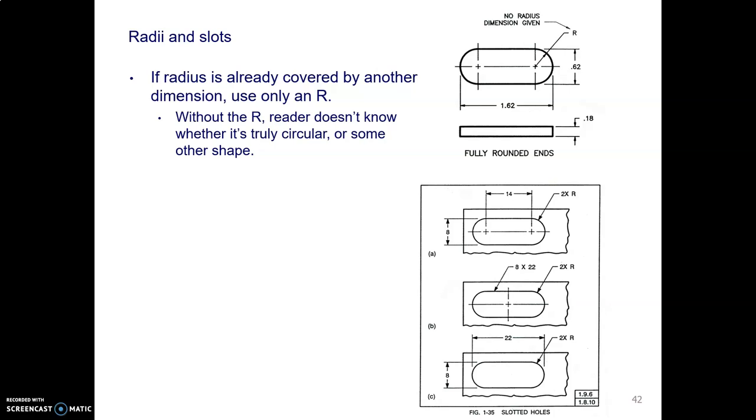Then with radii and slots, we have to watch out for duplicate dimensions here. If we have a slot with a radius on the end, if you dimension the thickness of the slot, then for the radius you just say R. You need the R to tell them what shape it is, but if you gave them the size of the radius, that would be a duplicate.